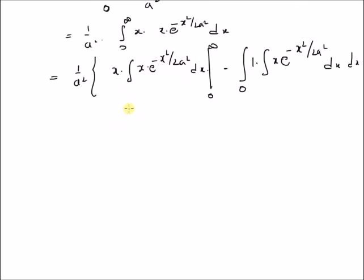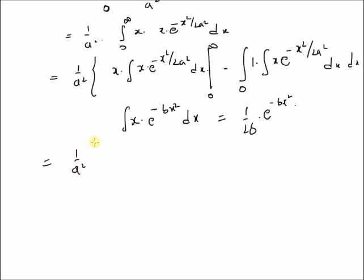This integral looks like a standard integral: ∫x · e^(−bx²) dx = (1/2b) · e^(−bx²). Using this formula where b = 1/(2a²), we get (1/a²) · x · (−a²) · e^(−x² / 2a²), and the indefinite integral becomes −(1/2) · (2a²) · e^(−x² / 2a²), giving us −a² · e^(−x² / 2a²).